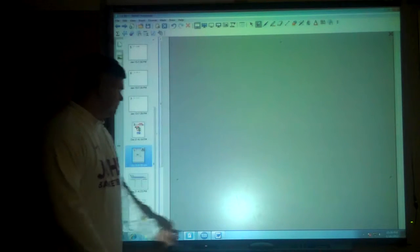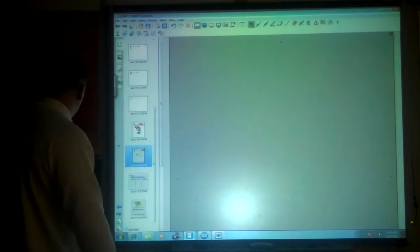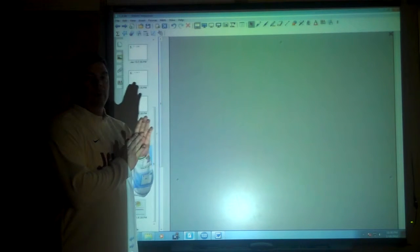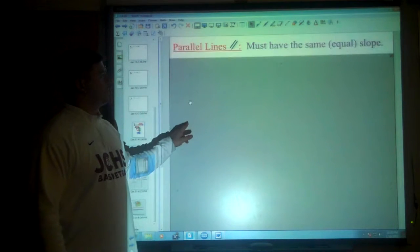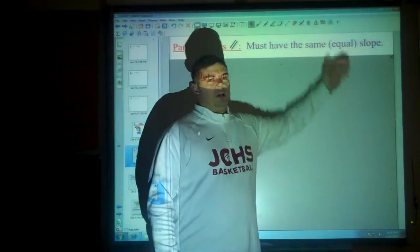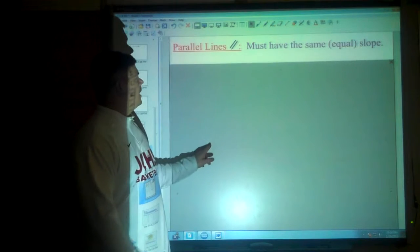Now with graphs, any time you have two lines that don't intersect each other ever, we call them parallel. And what's interesting is, in parallel lines, this is the symbol for parallel, they will have the same or equal slope.